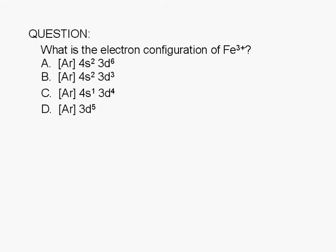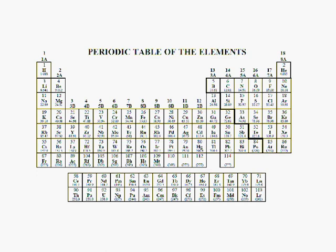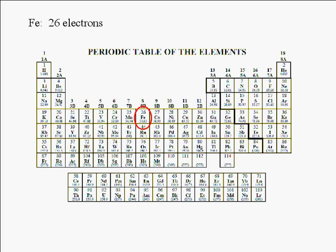Let's look up iron in the periodic table. Here's iron. Its atomic number is 26. Therefore, it has 26 electrons.